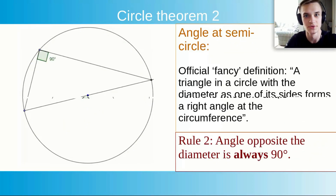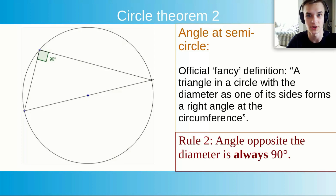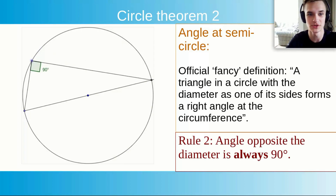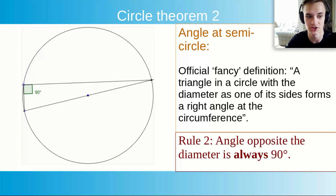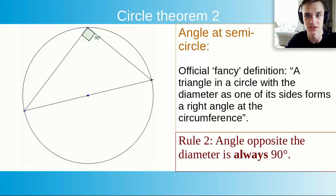Circle theorem 2: Angles at a semicircle. The official definition is: a triangle in a circle with a diameter as one of its sides forms a right angle at the circumference. Simple definition: angle opposite the diameter is always 90 degrees — it doesn't change no matter what circle you have. From the animation you can see that even if we move the point, it stays at 90 degrees.